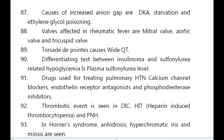Torsades de pointes is caused by prolonged QT. Differentiating test between insulinoma and sulfonylurea-related hypoglycemia is plasma sulfonylurea level. Drugs used for treating pulmonary hypertension are calcium channel blockers, endothelin receptor antagonists, and phosphodiesterase inhibitors.